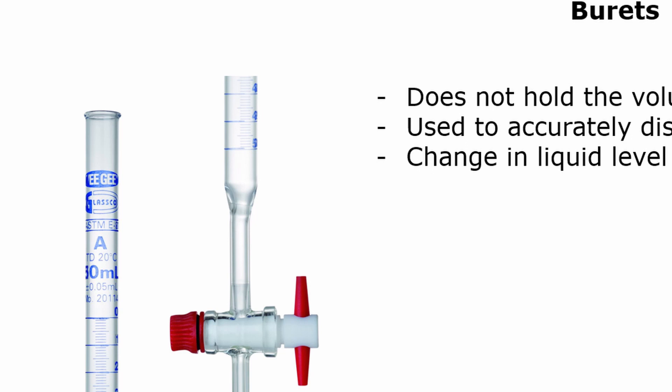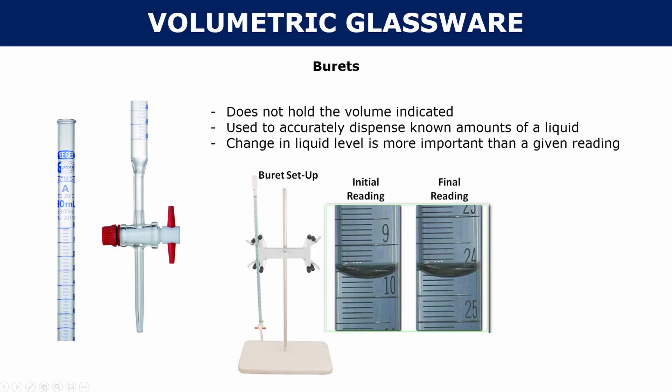If you're all the way at the top of your buret, if you look at the reading, the reading would tell you that you have 0 mils, which doesn't make sense. So burettes don't actually hold the volume indicated. They're only used to accurately dispense known amounts of liquid. The reason that they're used to dispense is because you look at the change in liquid level. Let's say I start off at a reading of 0 mils, and then I open the buret and some water flowed out. Your next reading tells you that you're at 7 mils. That means that 7 milliliters of your water was dispensed. That's exactly what you do in a titration. You have an initial reading and you have your final reading. You subtract the final reading from the initial reading, and that tells you how much of your liquid has been dispensed.